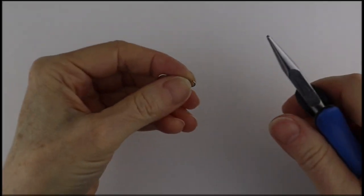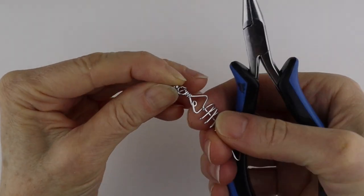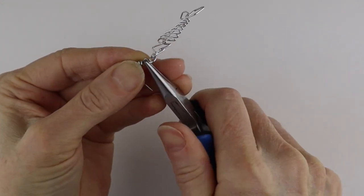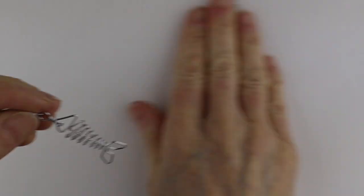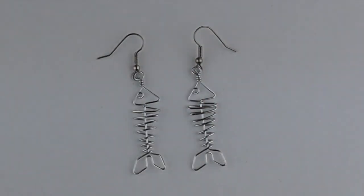So all you need to do now is open up your earring hook and stick the little fish bones on there, and there you have your pair of fishbone earrings. So thanks so much for watching the video.